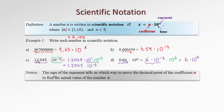So let's summarize. The sign of the exponent tells us which way to move the decimal point of the coefficient a to find the actual value of the number x. As we saw in example b, negative 4 tells us the dot after 4 needs to be moved to the left 4 steps to recover the original number. While in example a, the exponent 8 tells us the dot needs to be moved to the right to recover the original number.